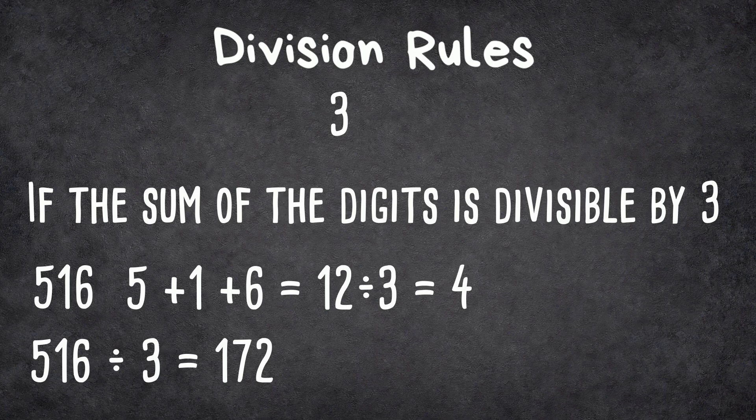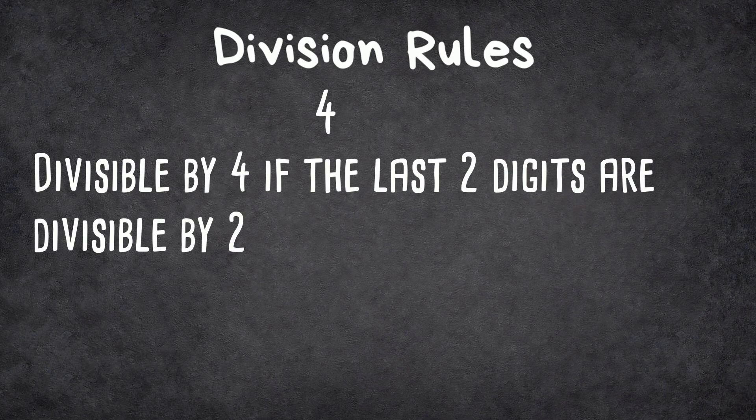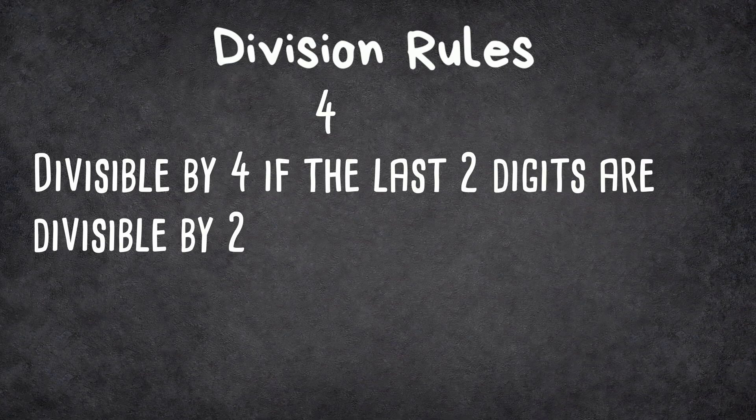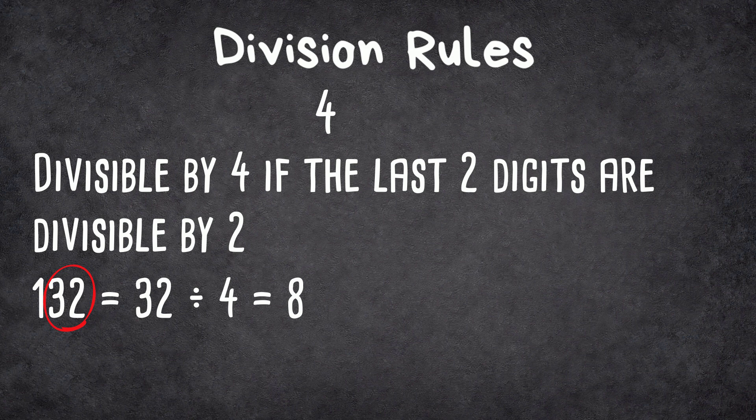Next, let's look at 4. It's divisible by 4 if the last two digits are divisible by 4. In this example, the last two digits are 32, and yes, 32 is divisible by 4 because it goes in 8 times.